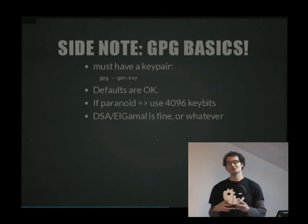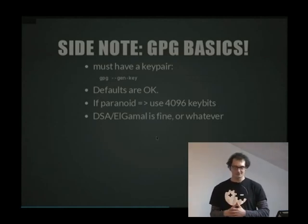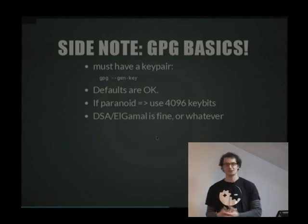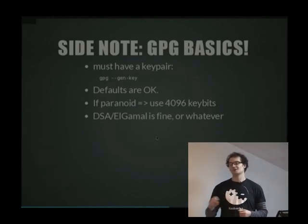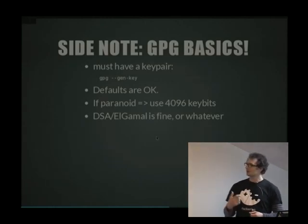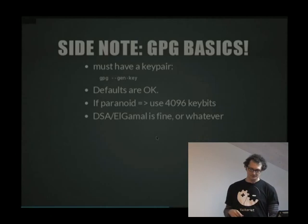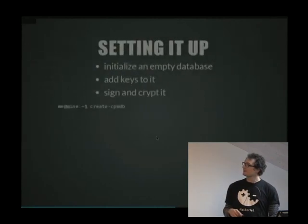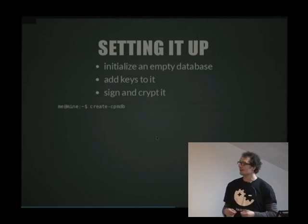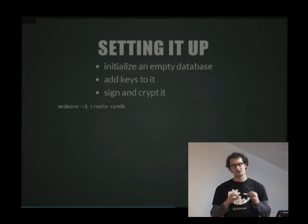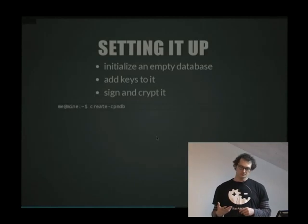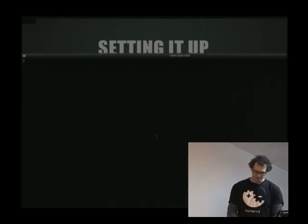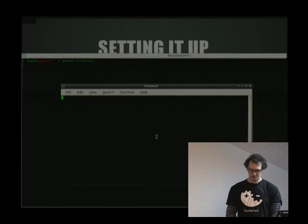Some GPG basics: to use CPM you need a key pair — a private and public key. Defaults for generating keys are okay; just run gpg --gen-key, and if you're paranoid use 4096 bits. Set up CPM by initializing an empty database: run 'create CPMDB' to create the database, then add keys, sign, and encrypt it. I'm going to open a larger terminal now to show you how that looks.